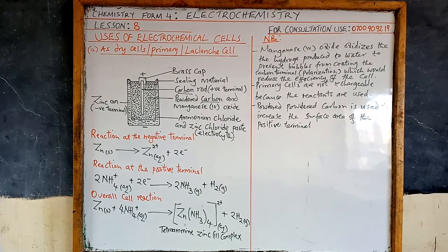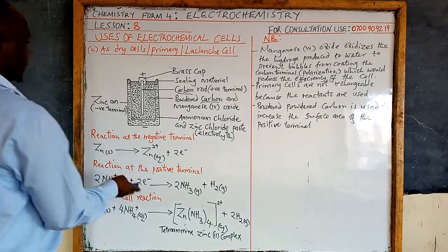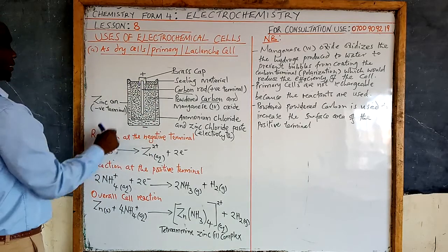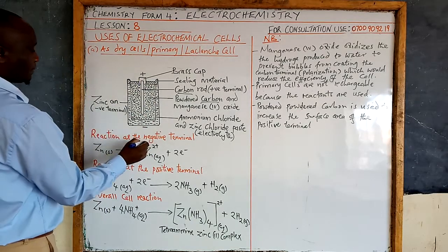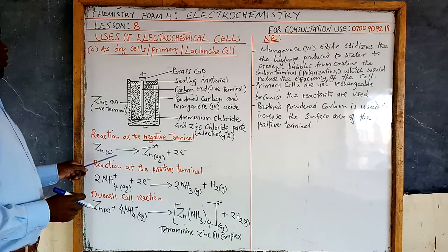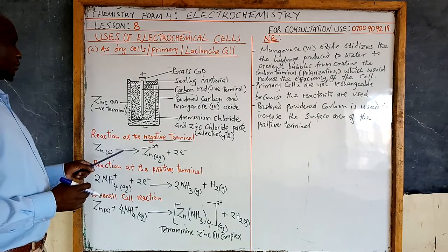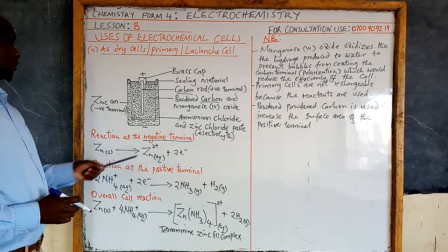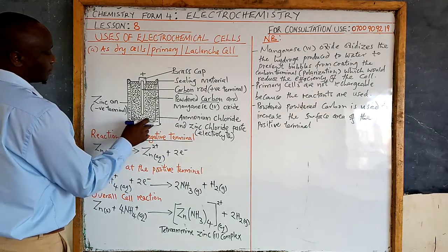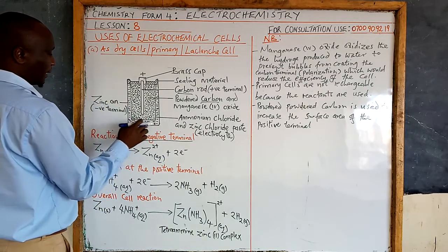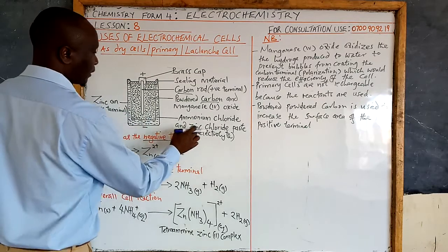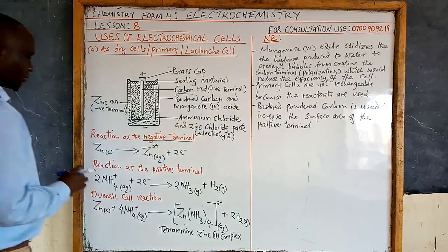Let's now discuss what happens and the functions of each of these parts. The reaction usually starts from the outside — the zinc can — which acts as the negative terminal. The zinc can forms ions by losing electrons. The zinc ions formed then react with the ammonia that is liberated from the electrolyte, which is the mixture of ammonium chloride and zinc chloride.